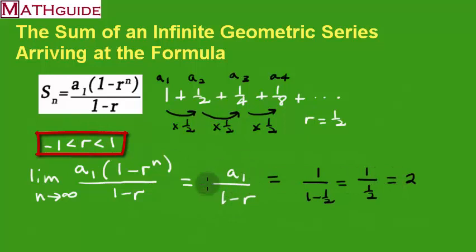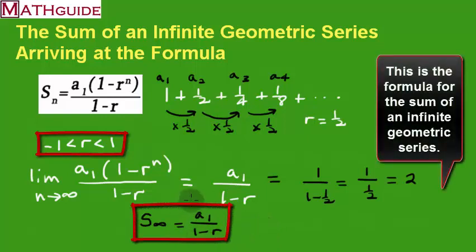So the formula we would use for an infinite series, you just take the first term and divide it by 1 minus r, 1 minus the common ratio, and there you go. You've got the sum of all of those infinite terms. Make sure you go back to mathguide.com, check out our other videos, interactive quizzes, and lessons. Take care.